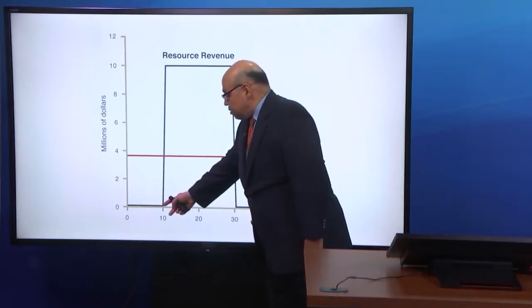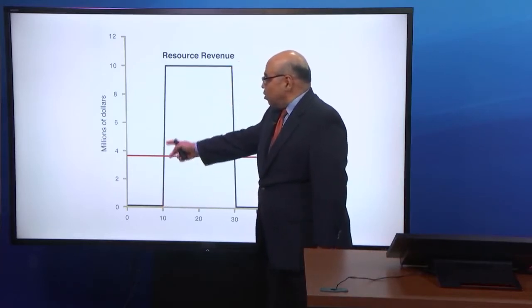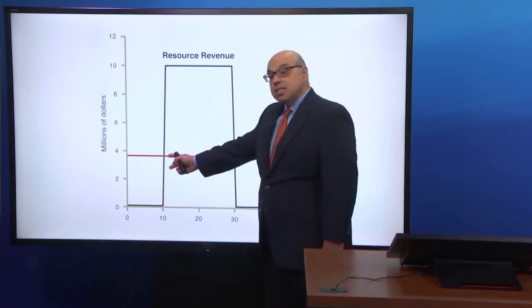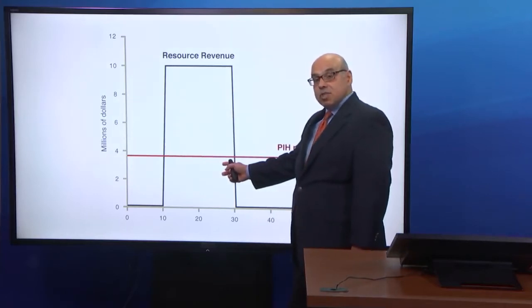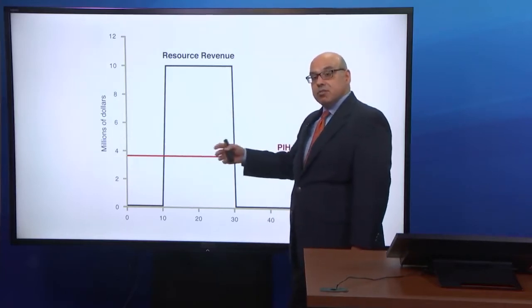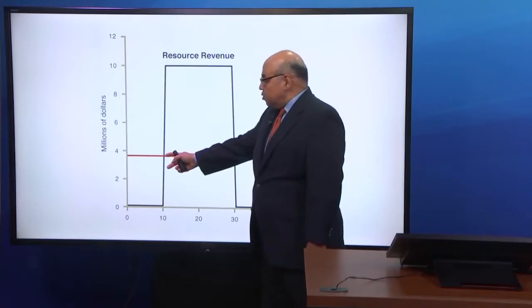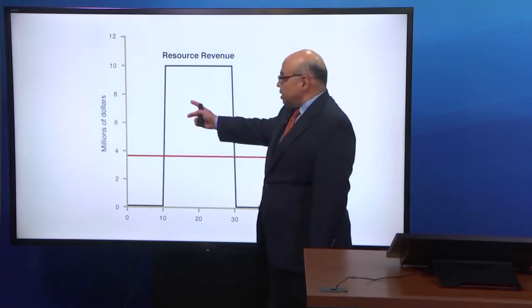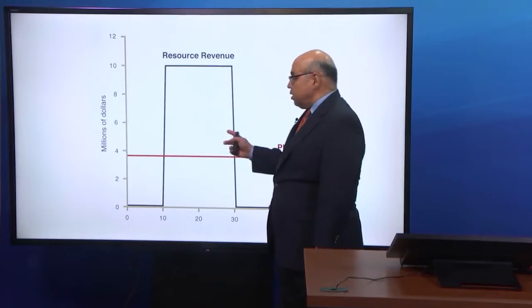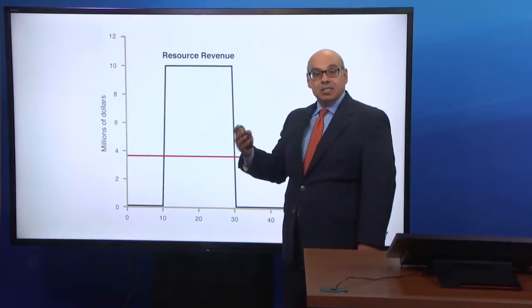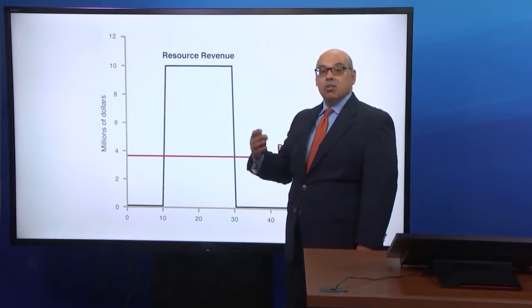As the resources start getting produced, you get resource revenue. And now, over this time period, government still maintains a constant flow of spending from every additional resource revenue. So over this period, resource revenue exceeds government spending, which means over this period, government is gradually building up its assets because it's not spending all the old revenue.